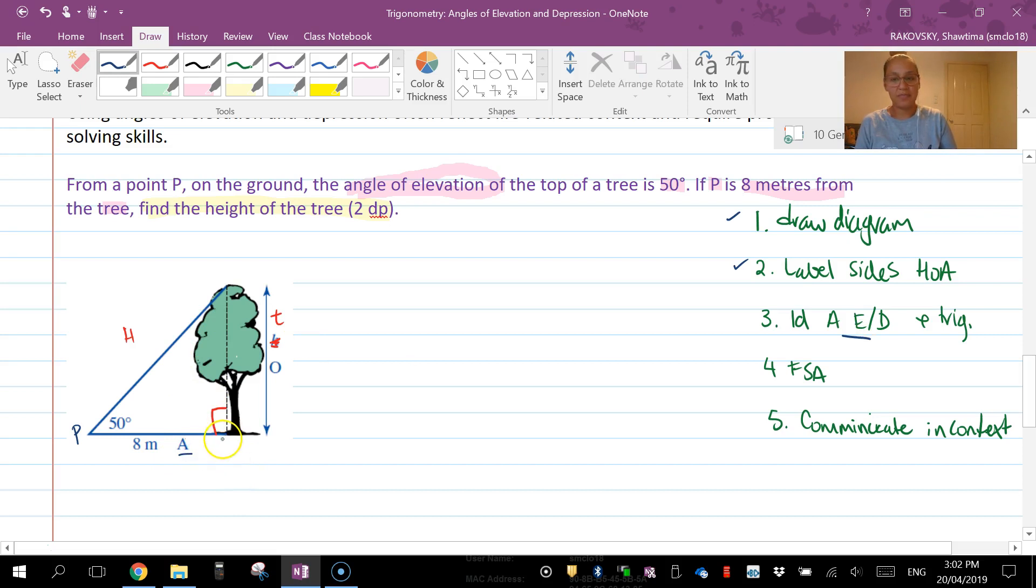I've been given an A, so that knocks down the sine straight away. And my angle is here opposite adjacent, I'm looking at a tan question. So tan theta equals opposite over adjacent.